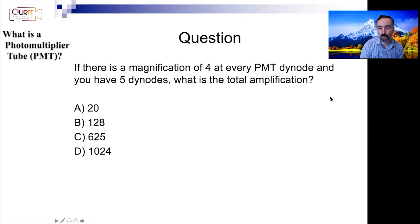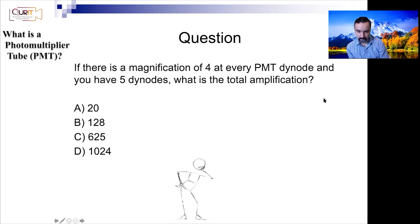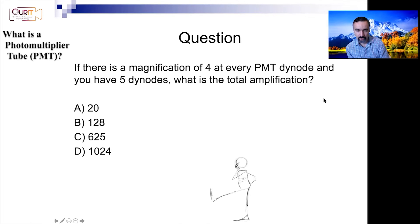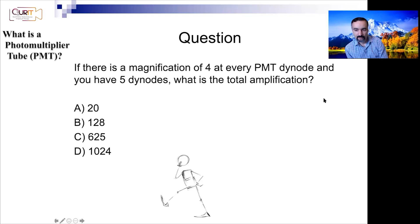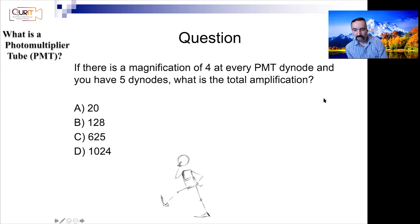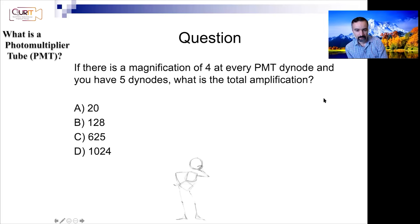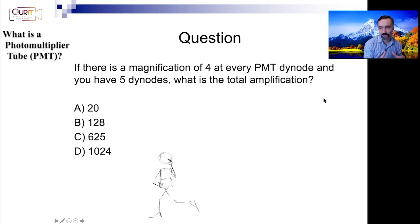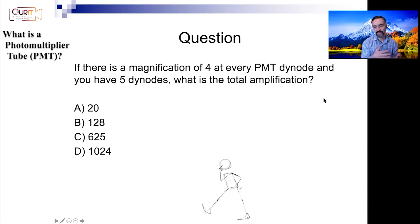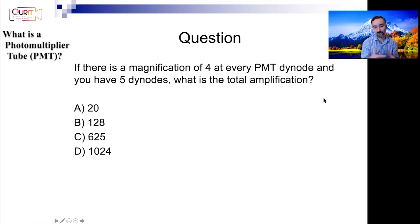Poll question: if there is a magnification of four at every PMT dynode and you have five dynodes, what is the total amplification? Think about it — five dynodes, magnification factor of four. Note this is an under-representation: a real PMT has more than five dynodes, typically around nine to sixteen, and the amplification per dynode is also more than four.